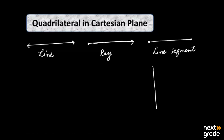Now, what is the plane? If we take a Cartesian plane, it means we have an x-axis and a y-axis. If you consider those two straight lines that perpendicularly intersect each other, we define O as the origin. We have the negative y-axis, the negative x-axis, the positive x-axis, and the positive y-axis. So basically, a line, ray, or line segment we always look at in the Cartesian plane.